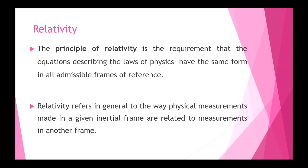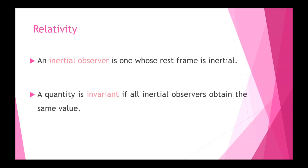Relativity refers to the way physical measurements made in one reference frame are related to measurements in another reference frame. Basically, it refers to the transformation of one reference frame to another and how laws of physics behave across frames. One frame may be at rest while the other moves with constant speed. An inertial observer is one whose rest frame is inertial. A quantity is called invariant if it doesn't vary from one reference frame to another.